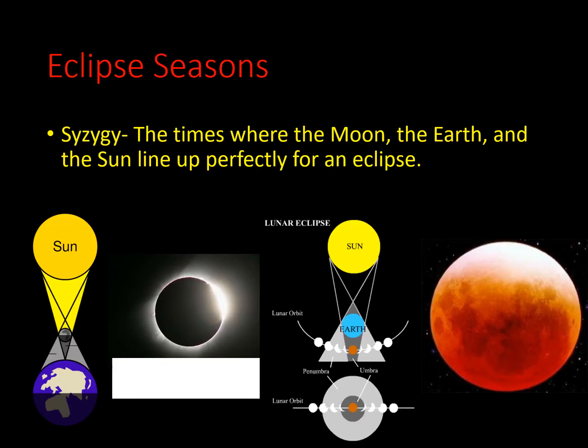Eclipse season refers to the times when the moon, earth, and sun line up perfectly for an eclipse. When the lunar and solar eclipses align perfectly in a straight line, this is called syzygy.